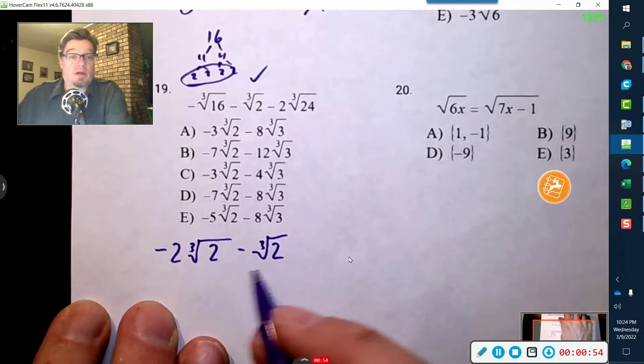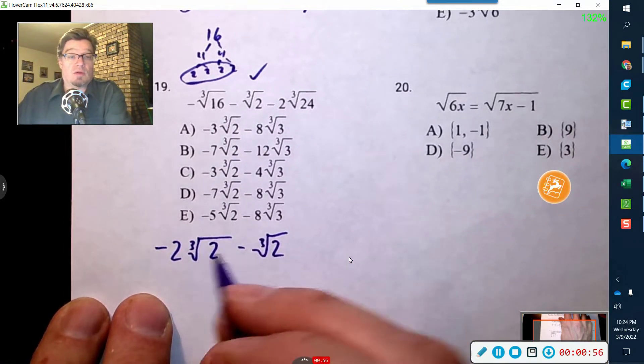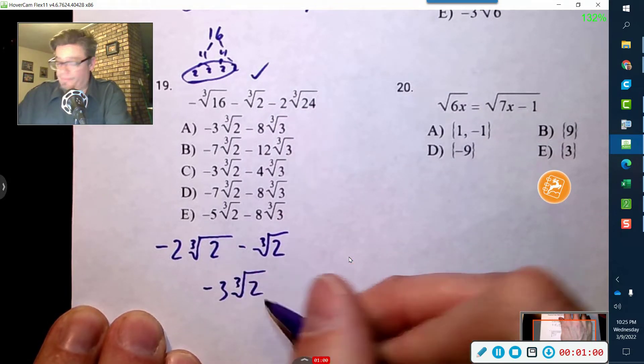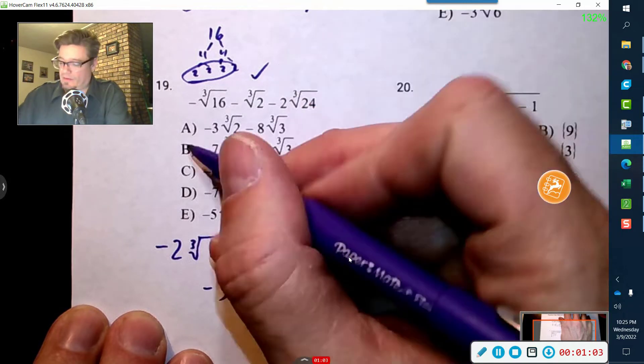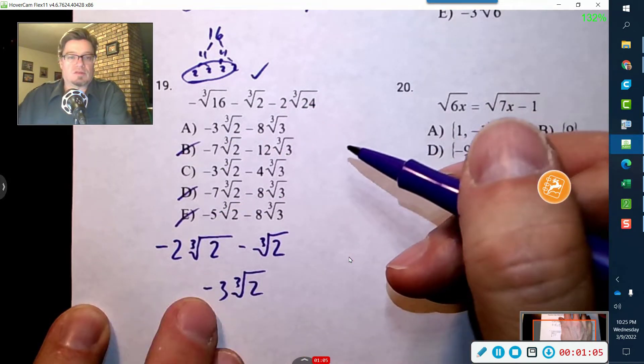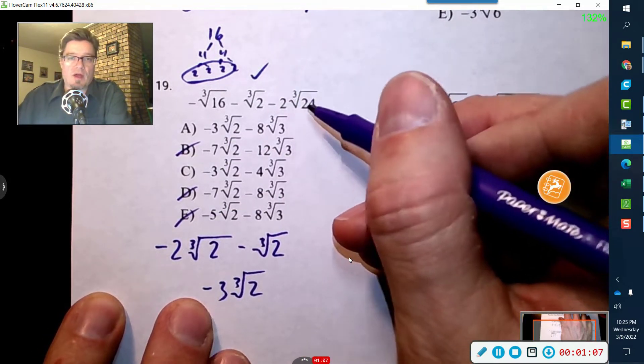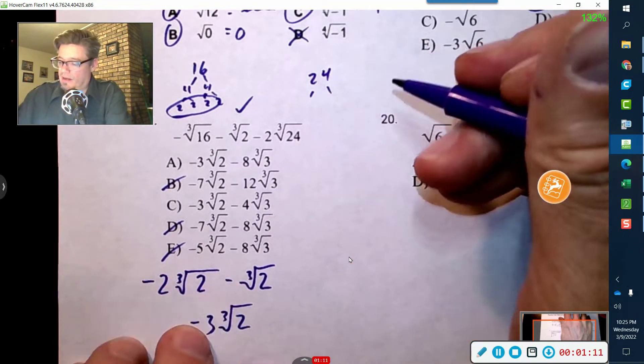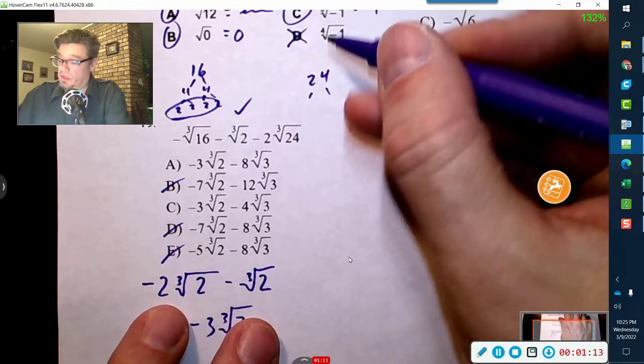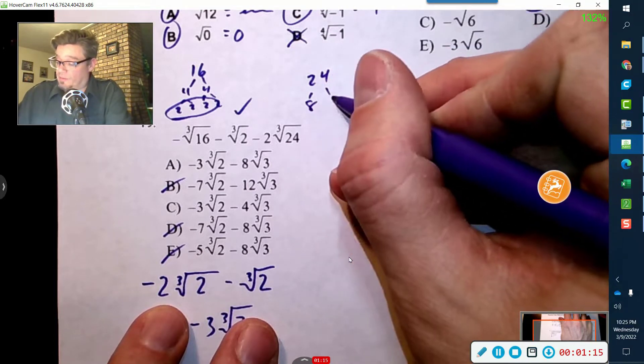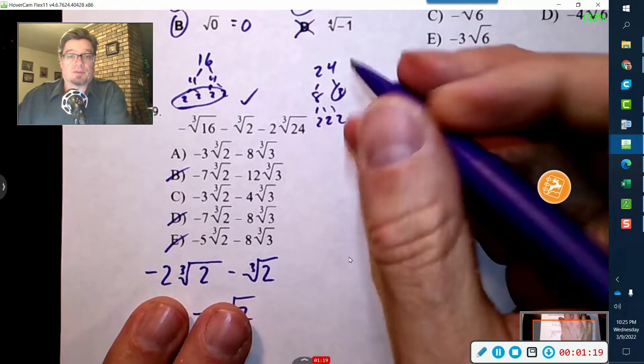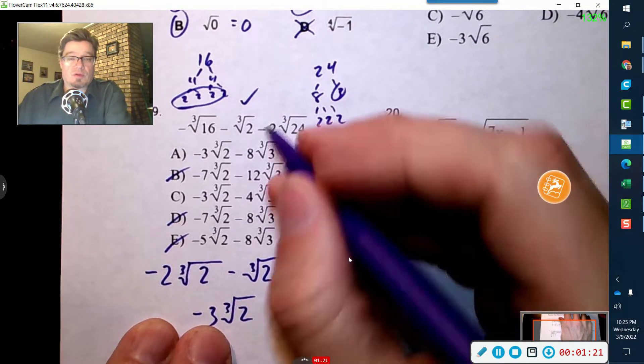And then two is actually still in there. This guy's here as well. These two are now like terms, so these will combine for a negative three cube root of two. All right, so negative three. So definitely not those three because I already know that inside twenty-four is going to be three. So that's eight times three, and then inside is actually three twos, and I'm looking for those three twos to come out.